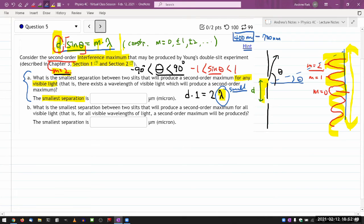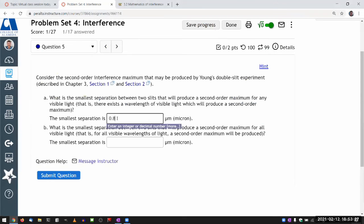Since I want my final answer in microns, I'll just use lambda equals 0.4 micron. So the smallest separation here should be d is equal to the order two times the wavelength, 0.4 micron divided by one. So that should be the answer. Did I just give the answer? I think I did. 0.8 micron.